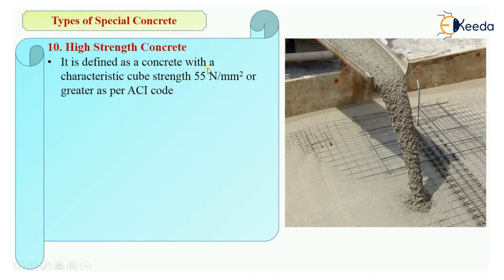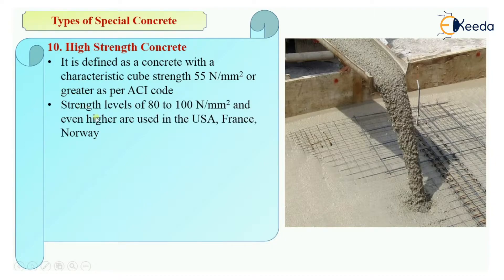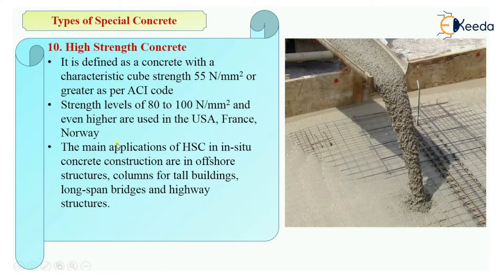High strength concrete is defined as concrete with a characteristic cube strength of 55 N/mm² or greater — this is the definition given by the ACI code, that is the American Concrete Institute. If you make a concrete and test a cube under a UTM machine and the strength is more than 55 N/mm², that concrete is called high strength concrete. High strength levels of 80 to 100 N/mm² have also been achieved in countries like the USA, France, and Norway.